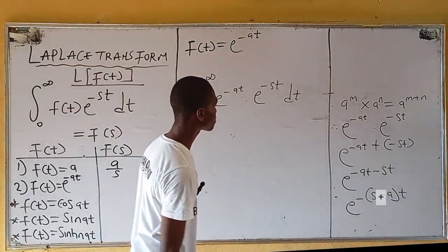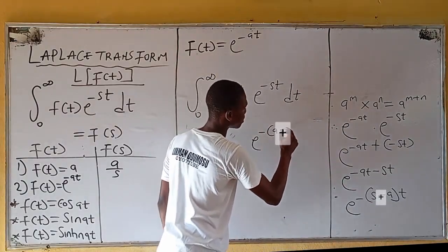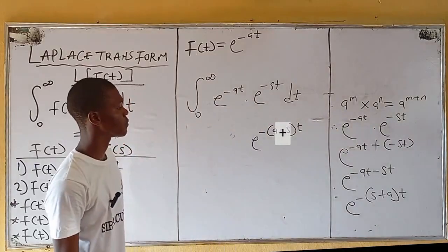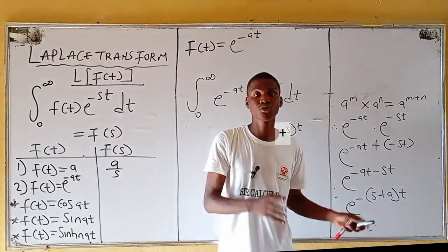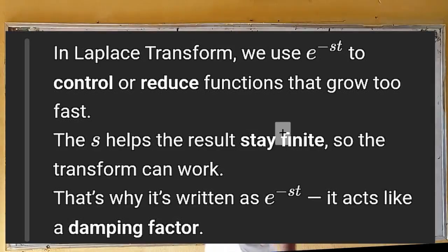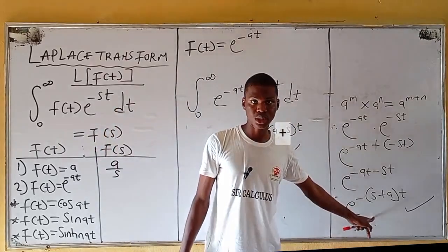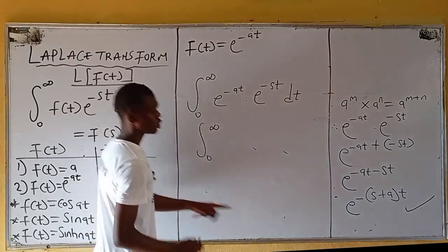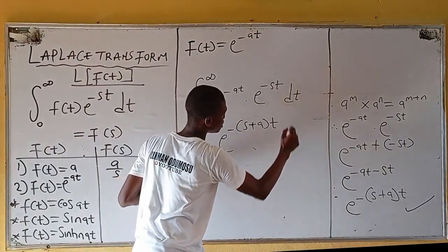In some cases you might write this as e^(-(a-s)t), but always consider the order — s should come first. Since we've generalized Laplace transform with e^(-st), go with the form where s comes first. Moving on, the integral from zero to infinity becomes the integral of e^(-(s+a)t) dt.